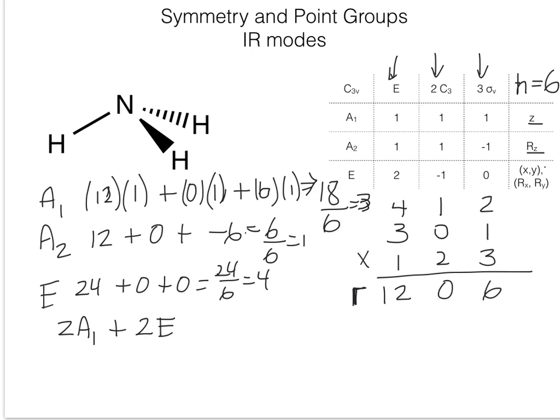All of these remaining modes are infrared active. You can tell they're infrared active because they have the same symmetry as the coordinate axes — z here makes A1 infrared active, and x and y here makes E infrared active. A2 is not infrared active because it does not have one of the x, y, or z coordinate axes associated with it.